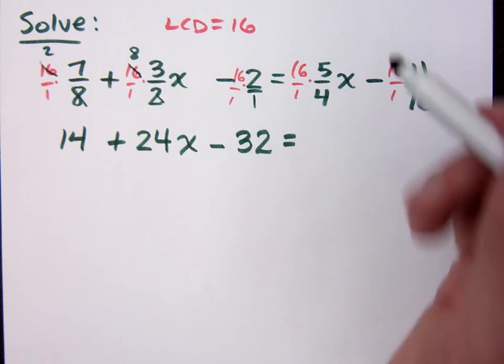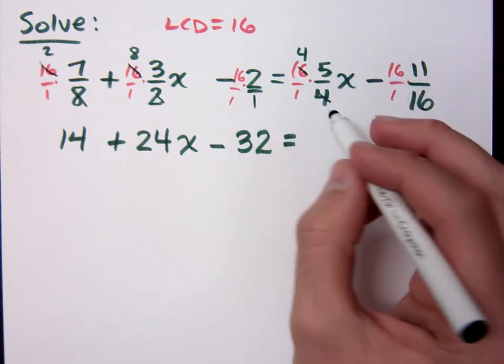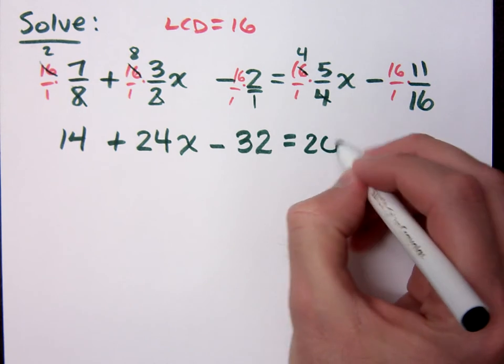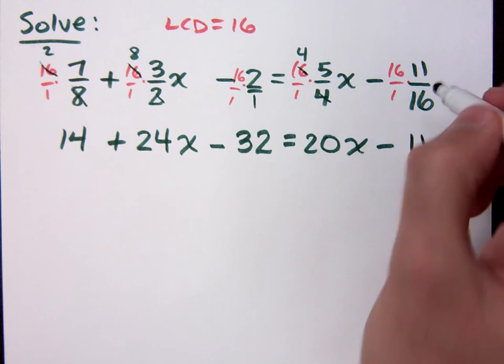On the right side of the equation, what do we have? 20x. Right. Four goes in there four times, and that's 20x. Minus what? 11. Minus 11.